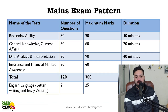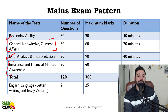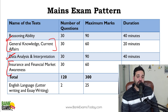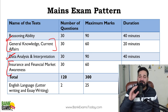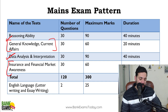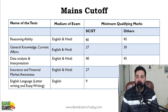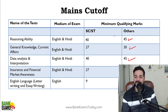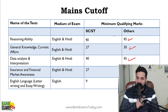Mains mein there is reasoning, there is data analysis and data interpretation, and then there are two sections. Ek toh general knowledge or current affairs wala, and the second one is insurance and financial market awareness. Kaafi similar hai RRB Scale 2 mein jo financial awareness aati hai, usse kaafi match karta hai. Out of 90, reasoning aur quant jo data analysis and data interpretation hai, 45-45 hai. General knowledge, current affairs and insurance and financial market awareness ke 30-30 hai.